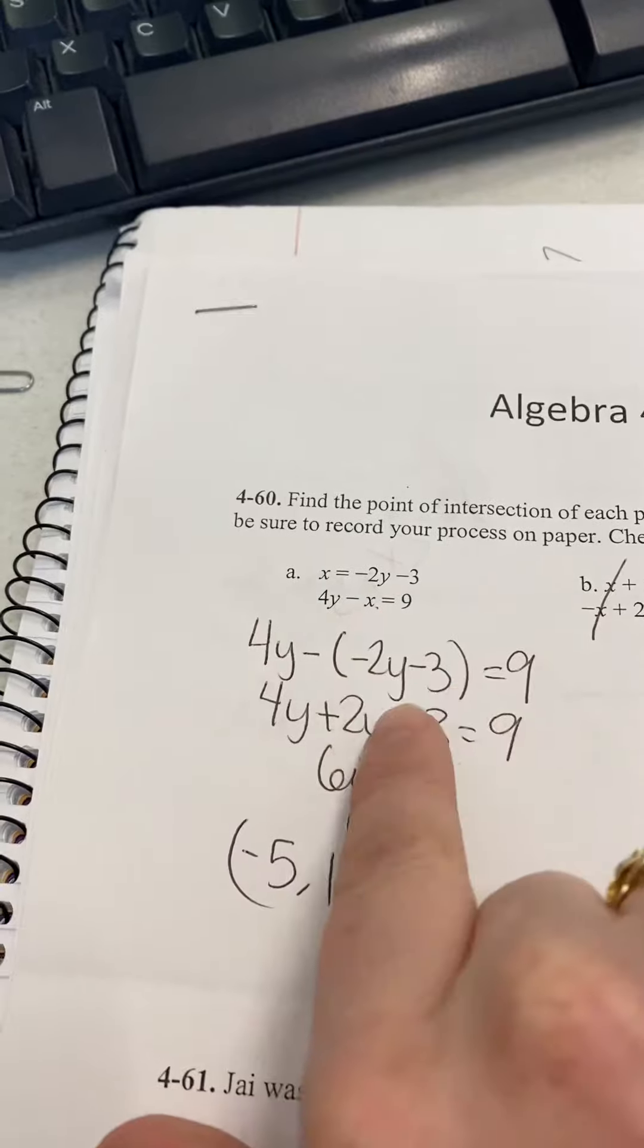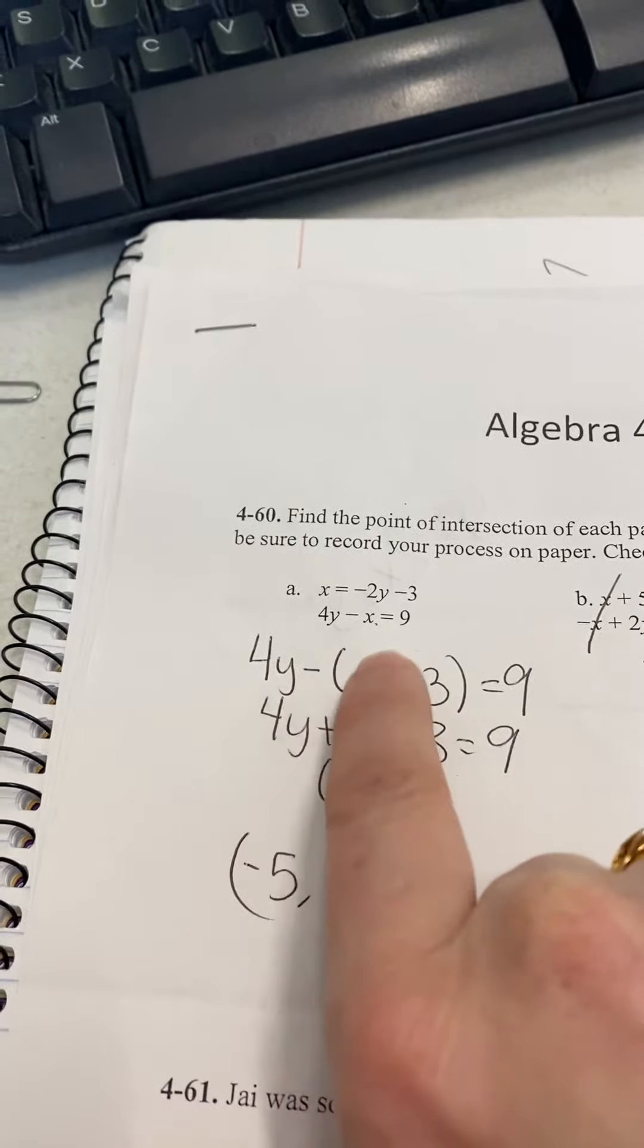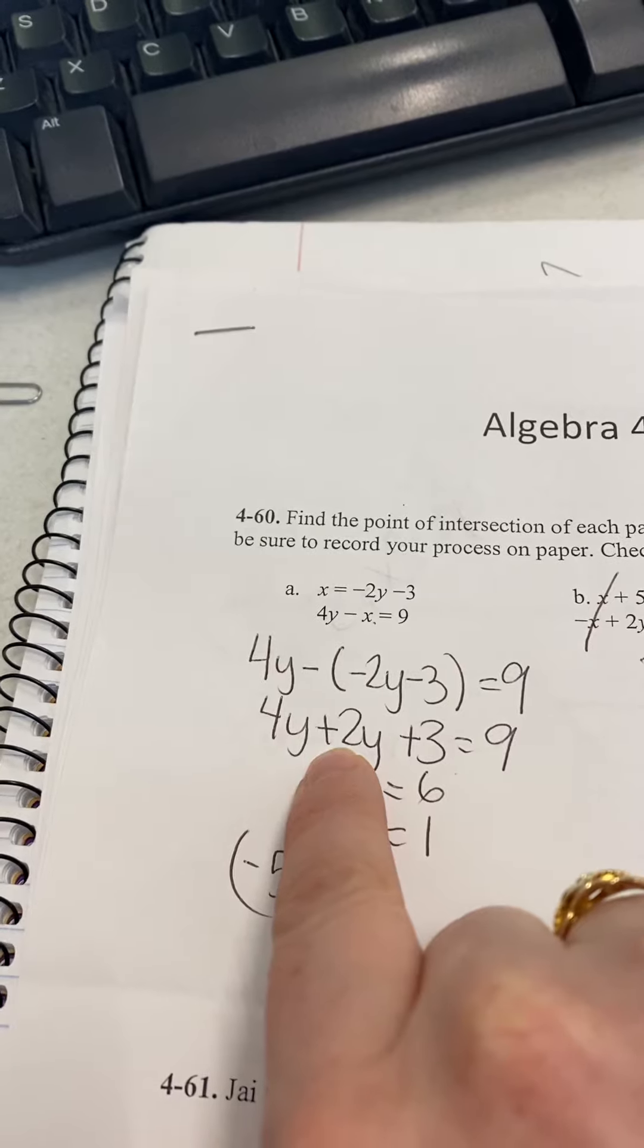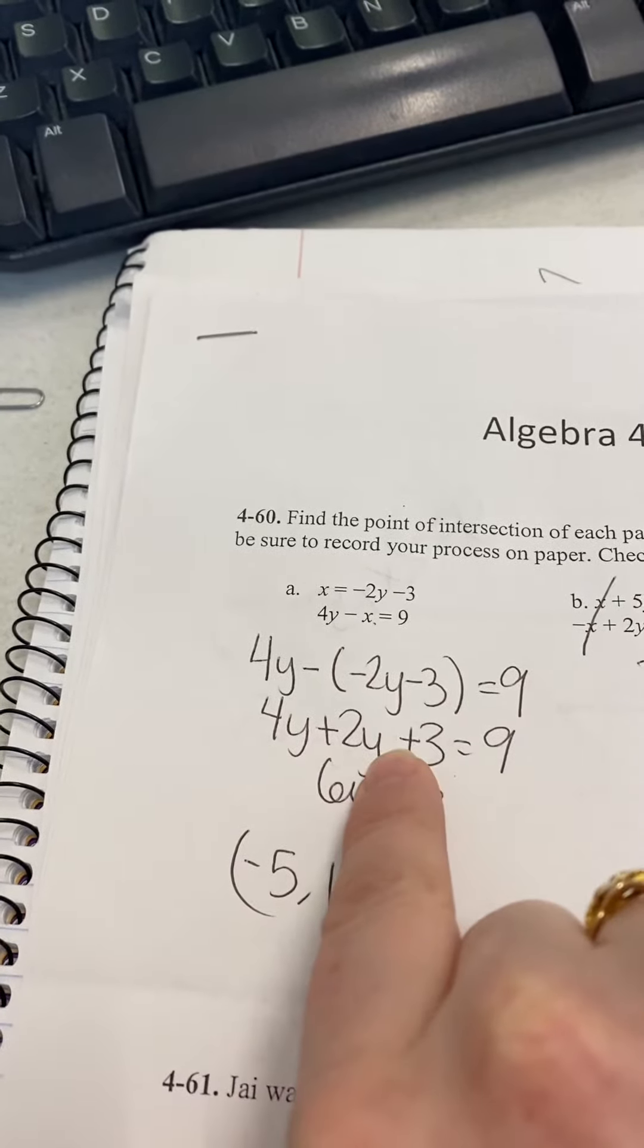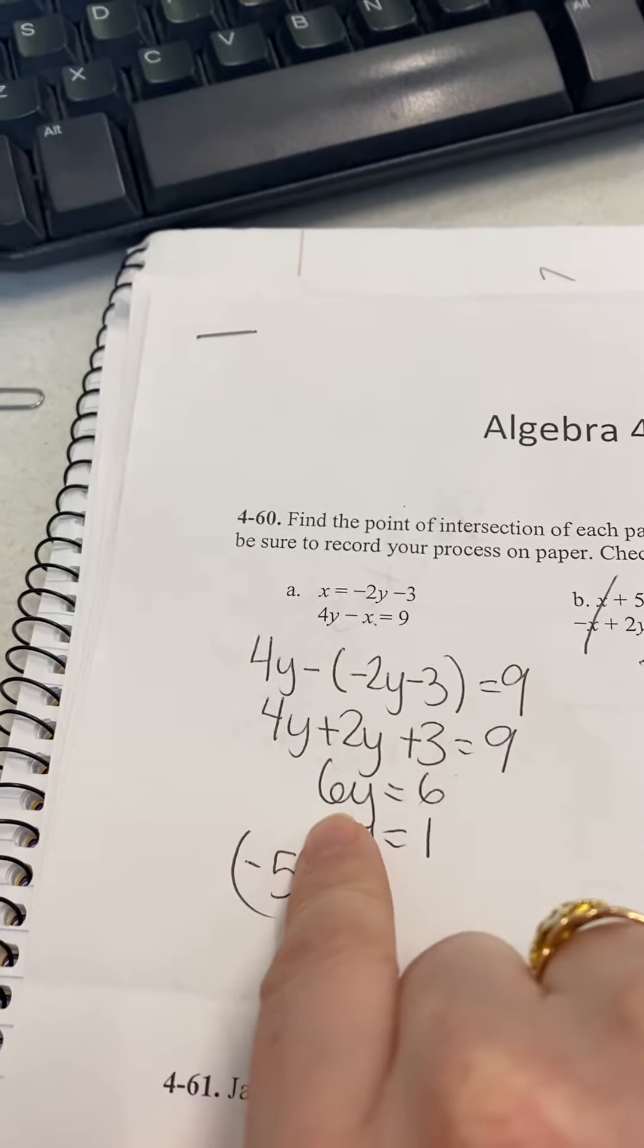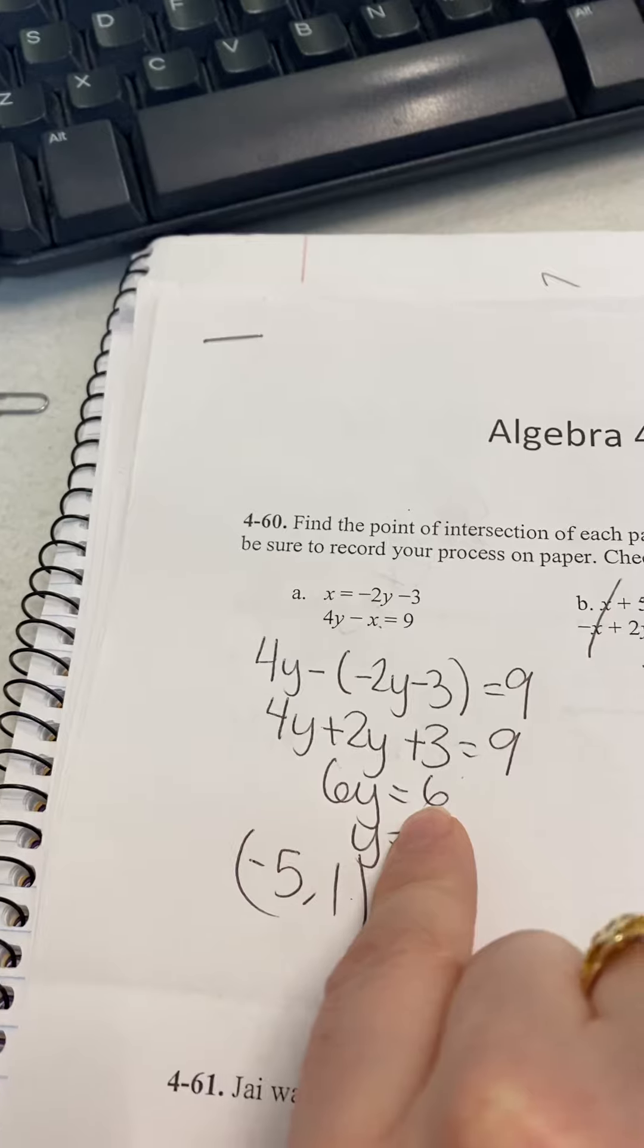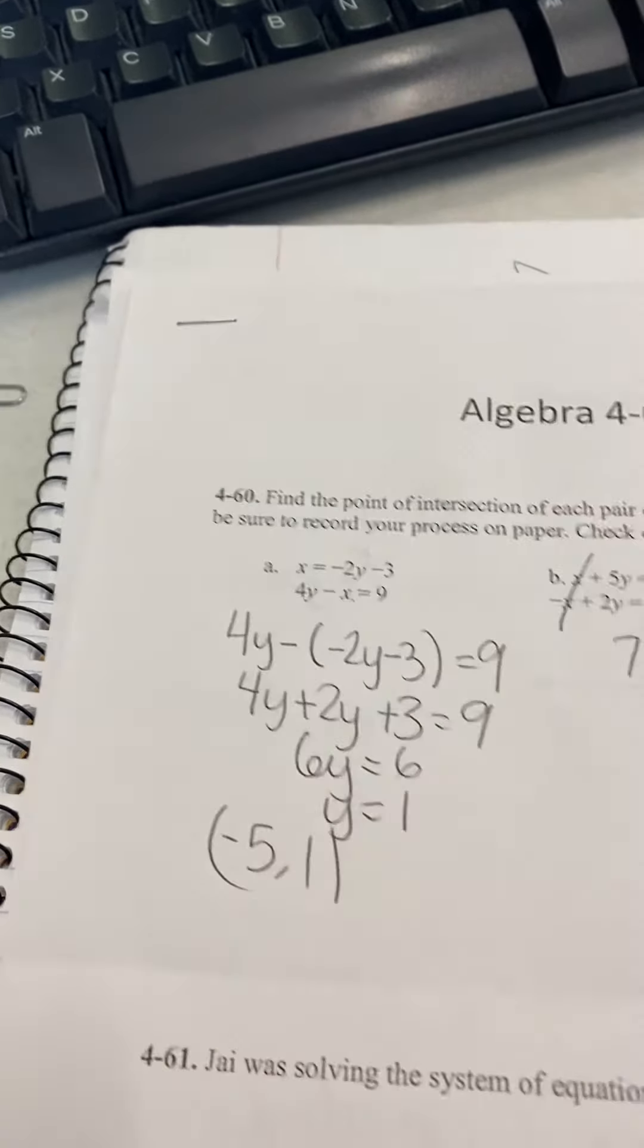Then you'll do the distributive property. Negative times negative makes it positive, negative times negative makes that positive as well. So you have 4y plus 2y, which is 6y, and then you subtract 3 from both sides to get 6, so y equals 1.